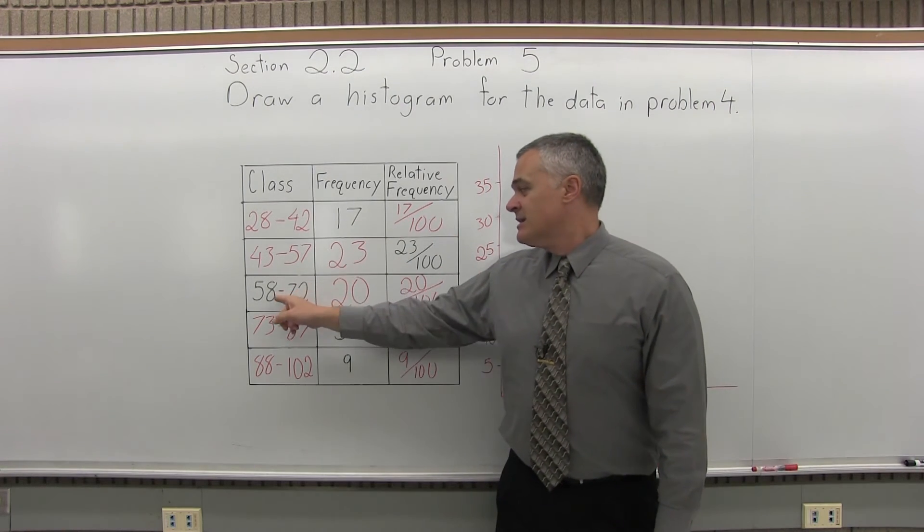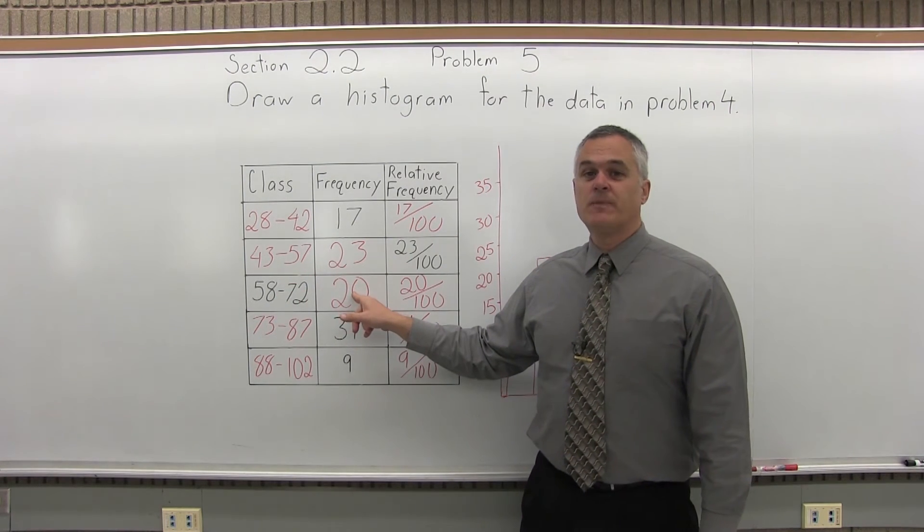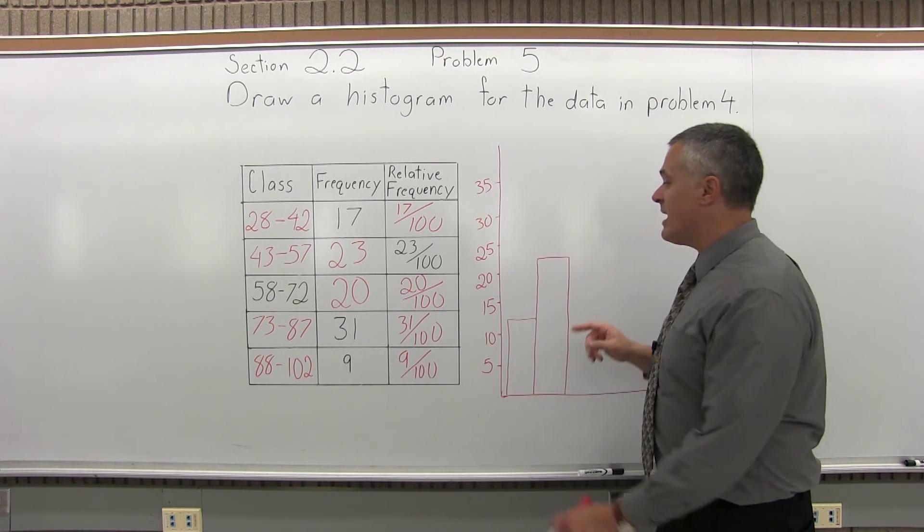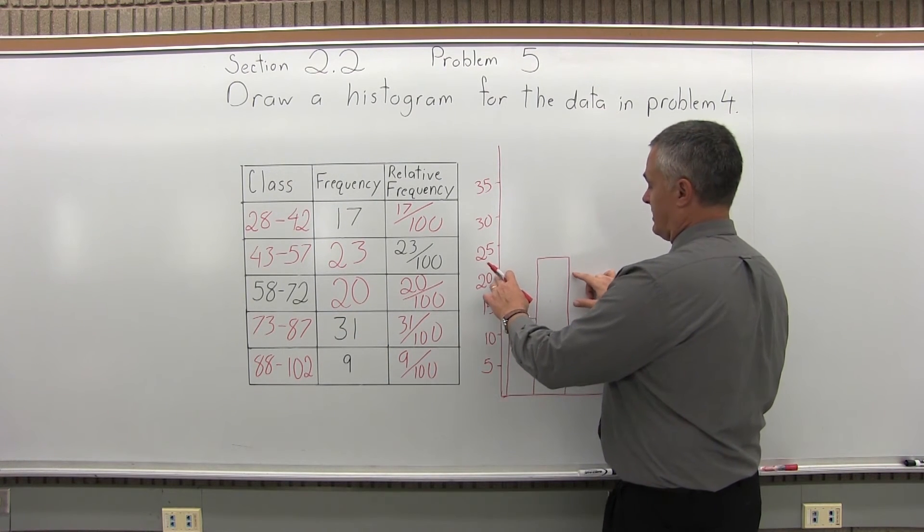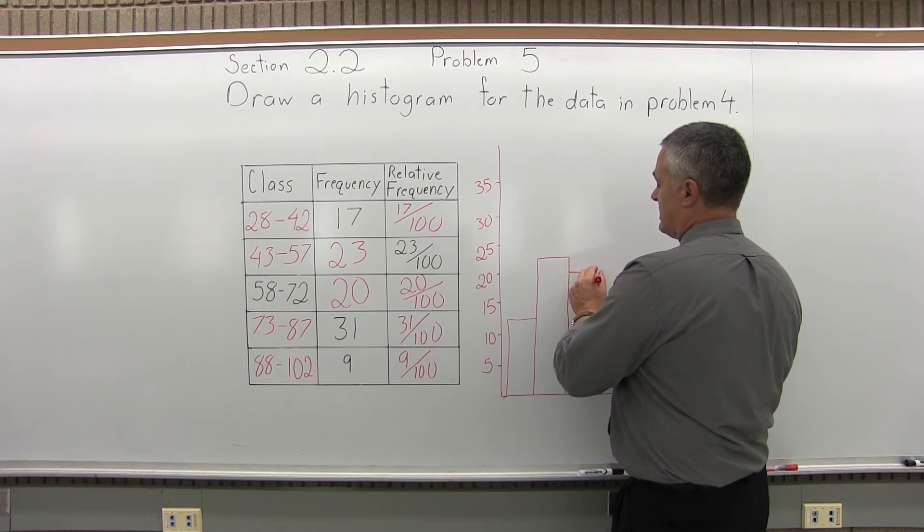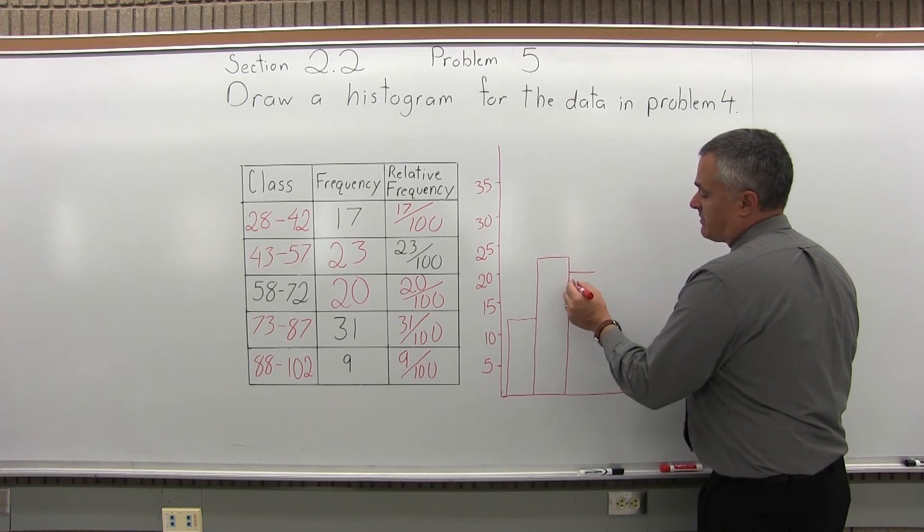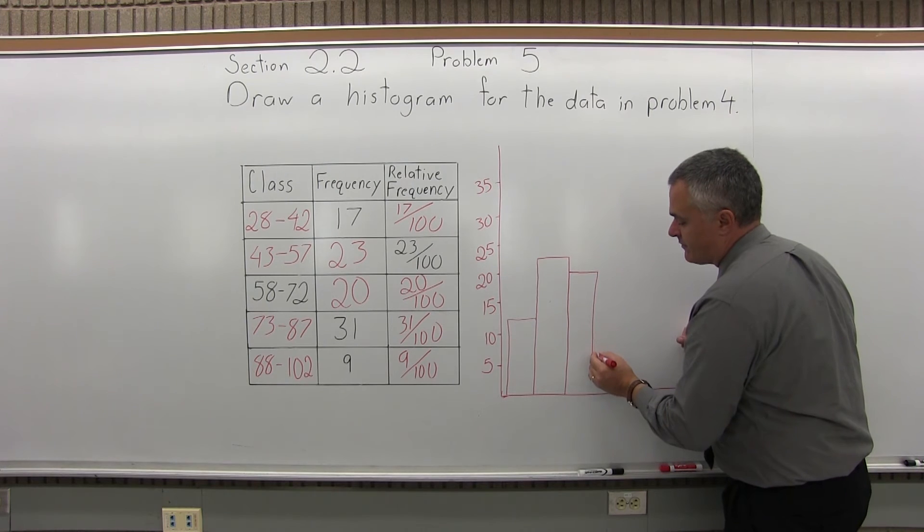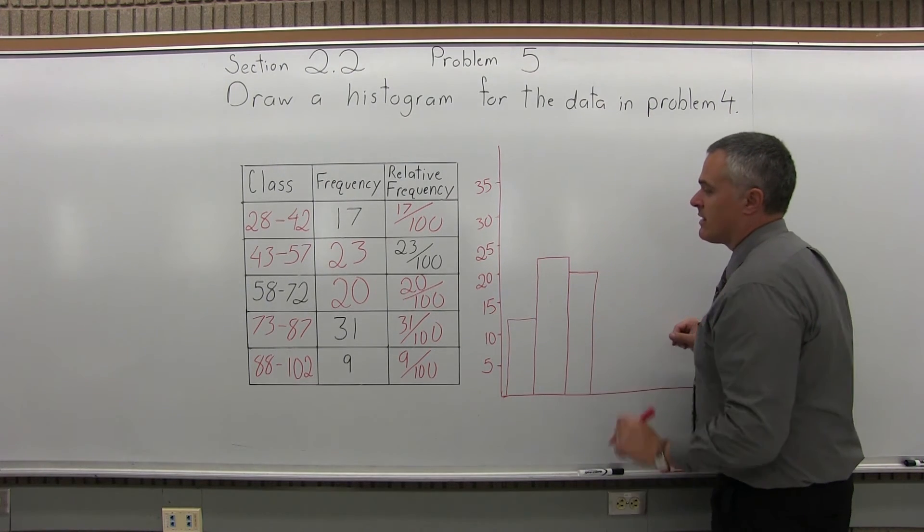Now, the next class has a frequency of 20. So, the next bar will have a height of 20. Now, in this particular case, I do have exactly 20 on my number scale. So, I just try and hit that 20 as close as we can. Again, the bars touch. So, I just continue the next bar from the edge of the previous bar. Like that.